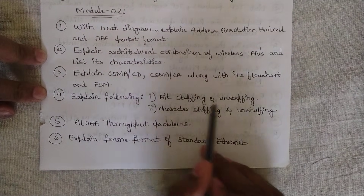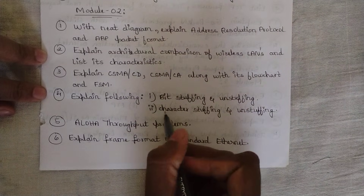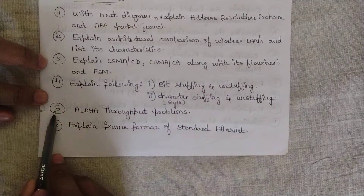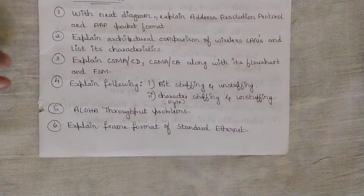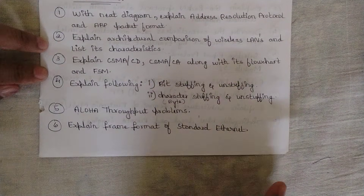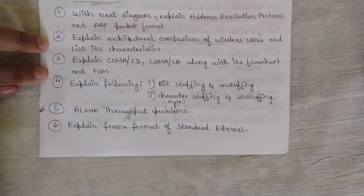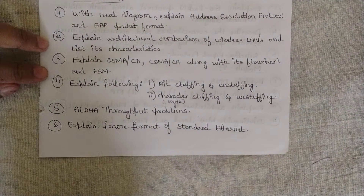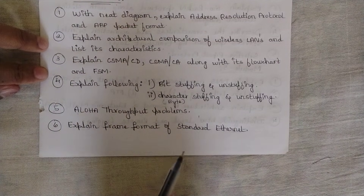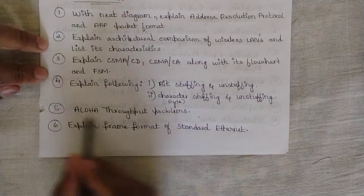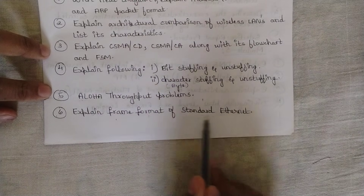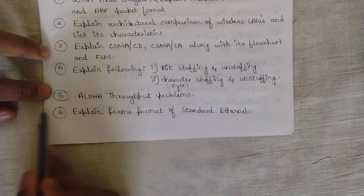The fourth question is a repeated one: 'Explain bit stuffing and unstuffing, and character stuffing and unstuffing' — character stuffing is also called byte stuffing. Please go through this. The fifth question: one problem from ALOHA throughput is definite. There are two types — pure ALOHA and slotted ALOHA — with a slight difference in the throughput formula for each. I've done a video on ALOHA where I solve an example problem — go watch it and be ready.